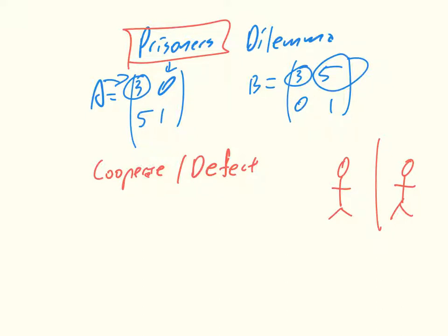But if both prisoners defect, so both tell on each other, so to speak, then they both go to prison for a long time, not getting a high utility.